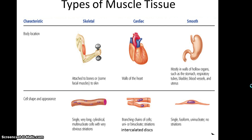And then finally, the smooth muscle tissue. It is found mostly in hollow organs, such as the stomach, respiratory tubes, and so forth. These cells are long, single cells. They have one nucleus, and they do not possess striations.